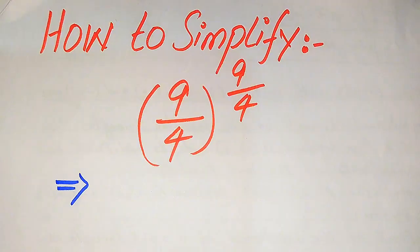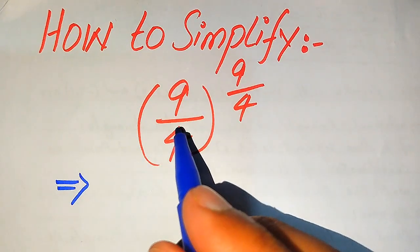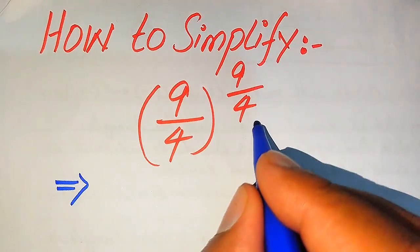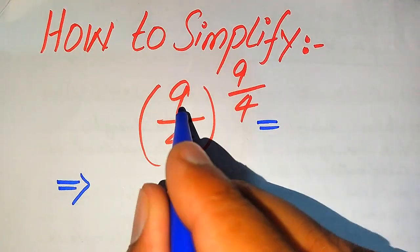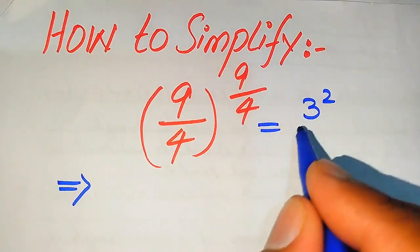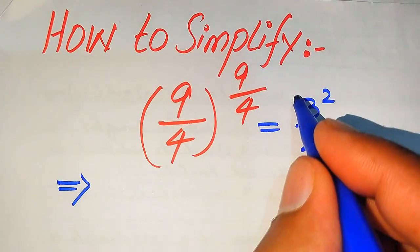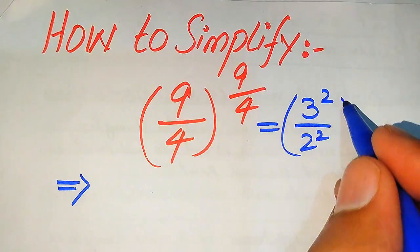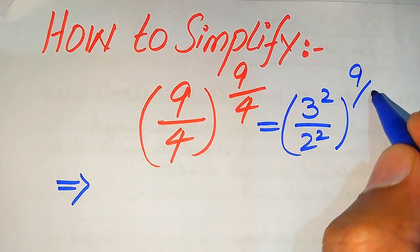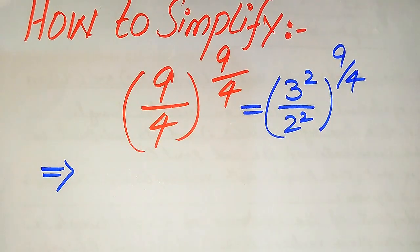Now we move towards the solution. First we focus on the base of this term. We write 9 as 3 squared and 4 as 2 squared, and its whole exponent is 9 divided by 4.